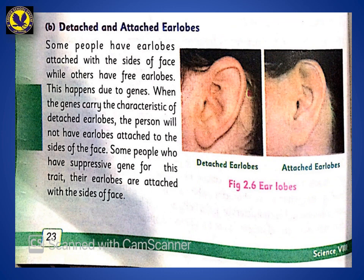Similarly, detached and attached ear lobes — some people have ear lobes attached with the sides of the face, while others have free ear lobes. This happens due to genes. When the genes carry the characteristic of detached ear lobe, the person will not have their ear lobe attached to the side of the face. Some people who have suppressive genes for this trait have their ear lobes attached with the sides of the face.